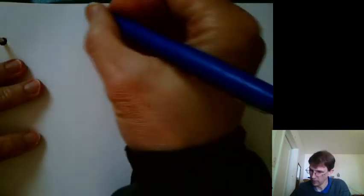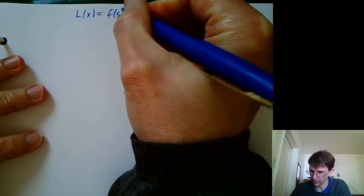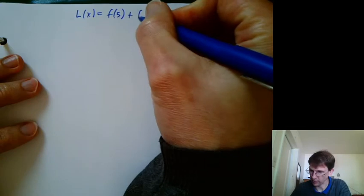Let's take a look at the tangent line formula from an algebra point of view. We have L of x equals f of 5, where we're using 5 as our central point.